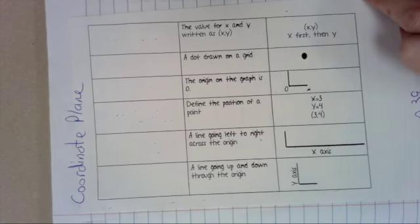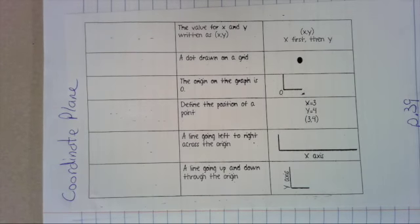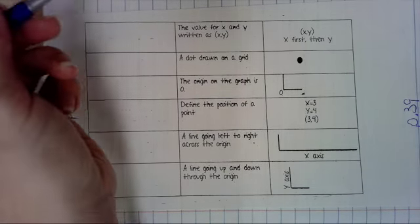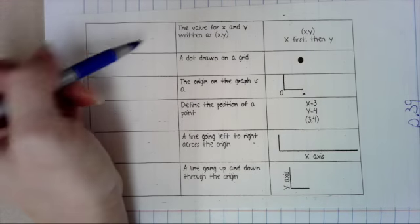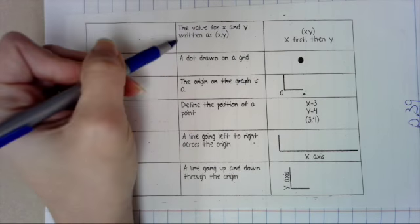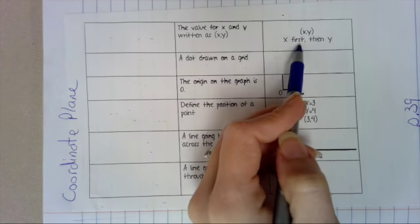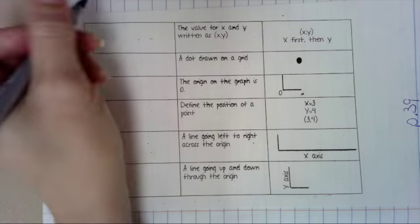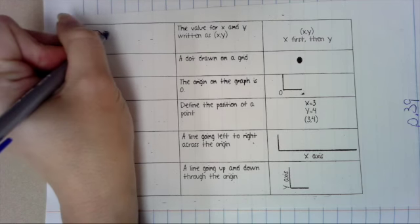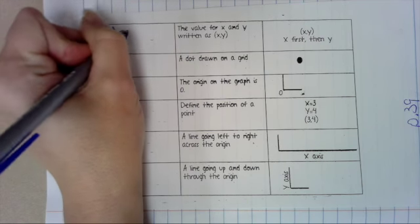So first, these are vocabulary words. This first vocabulary word, the value for X and Y written as X, Y in parentheses, X is first, Y is second, that is called an ordered pair.